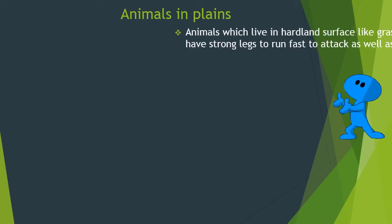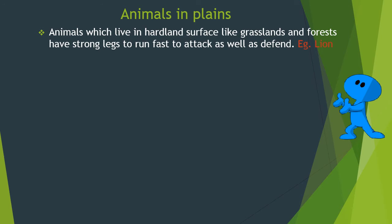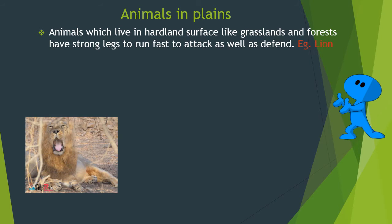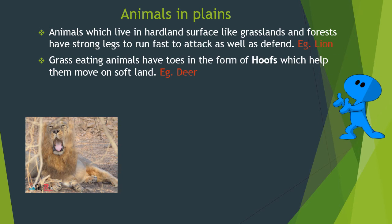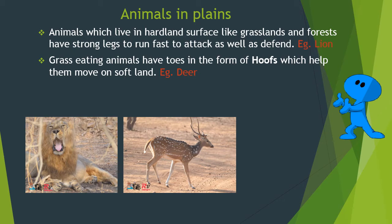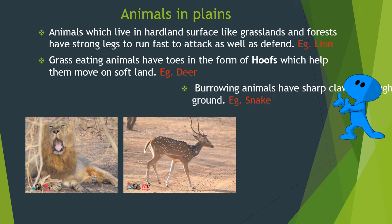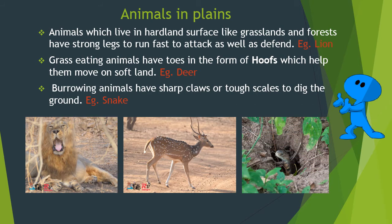Animals in plains — animals which live on hard land surfaces like grasslands and forests — have strong legs to run fast, to attack as well as defend. For example, lions. Grass-eating animals have hooves which help them move on soft land, for example deer. Burrowing animals have sharp claws or tough scales to dig the ground, for example snake.